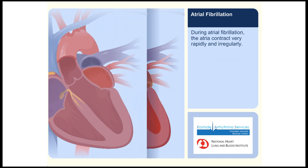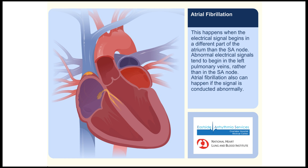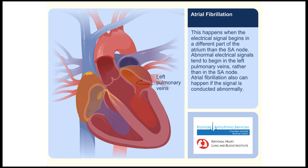During atrial fibrillation, the atria contract very rapidly and irregularly. This happens when the electrical signal begins in a different part of the atrium than the SA node. Abnormal electrical signals tend to begin in the left pulmonary veins, rather than the SA node.